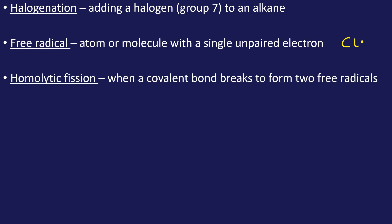Homolytic fission. This is when the covalent bond breaks to form two free radicals. For example, the covalent bond between two chlorines. If that bond breaks so that one electron goes to one chlorine and the other electron goes to the other chlorine, you end up with two chlorine free radicals. That's homolytic fission.